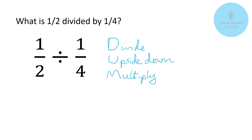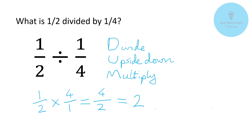Let's put this into action. We've got one half divided by one quarter, and we already know the answer should be two. So we leave the first fraction as it is, turn the second fraction upside down — so one quarter becomes four over one — and then we multiply those two fractions together. Multiplying fractions, we just multiply the top two numbers together and the bottom two numbers together: one times four gives us four, over two times one which gives us two. So we've got four over two, and four divided by two gives us an answer of two. The process works!